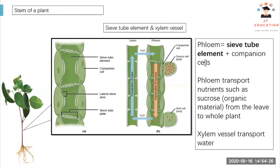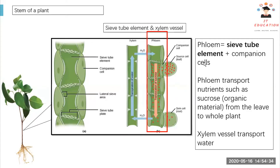Xylem vessel is to transport water. Let's look at a picture here. We have xylem and we have phloem. This tube is the sieve tube element, and then a companion cell — can you see the cell having a shape like this? This will be the companion cell. So together they make up the phloem.